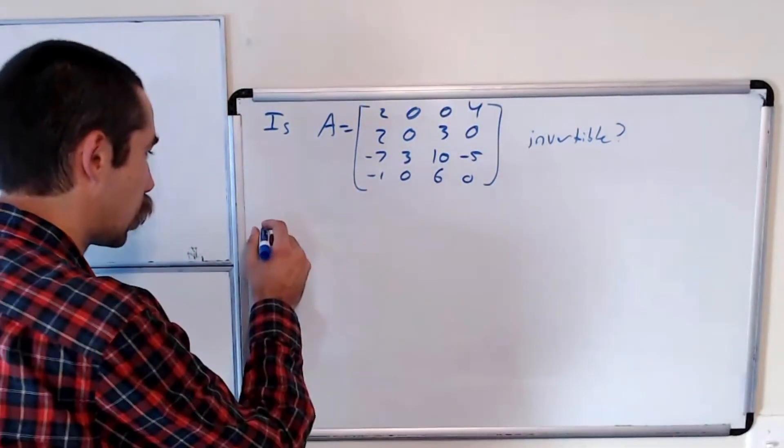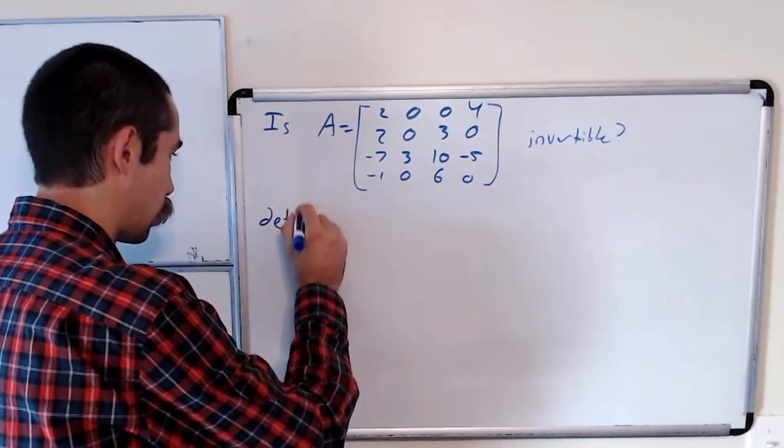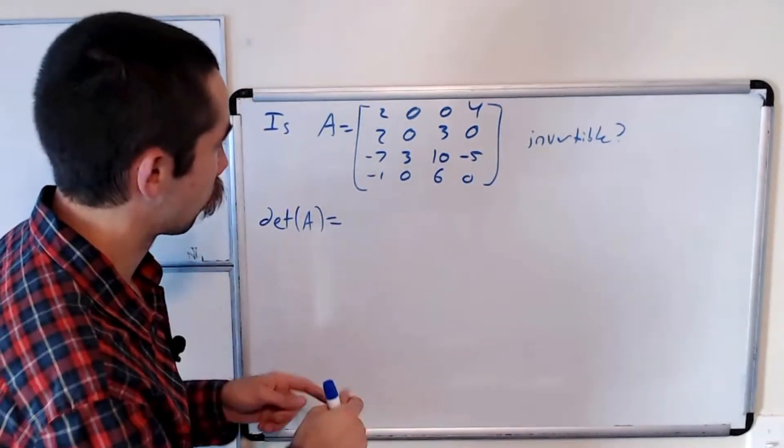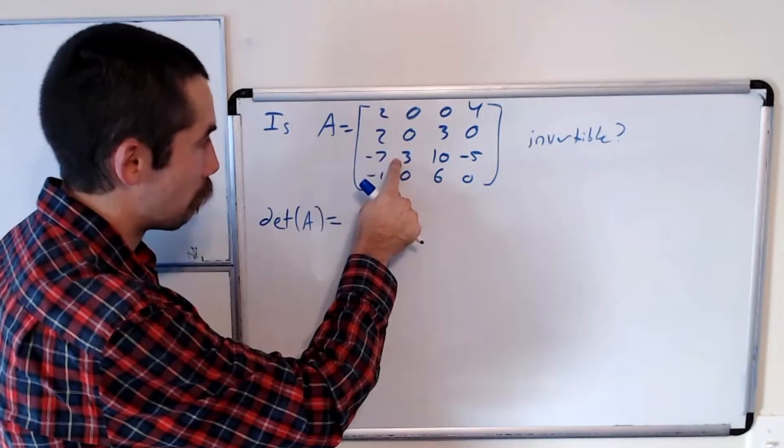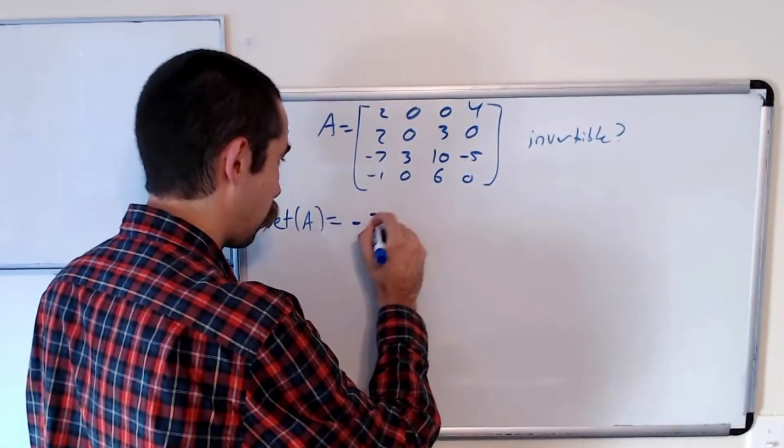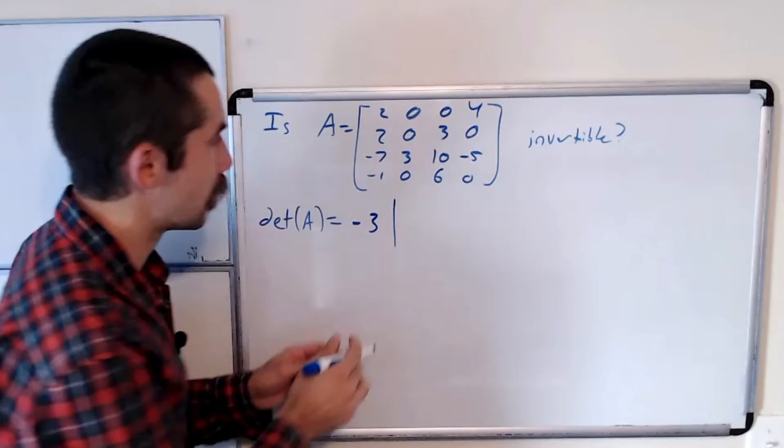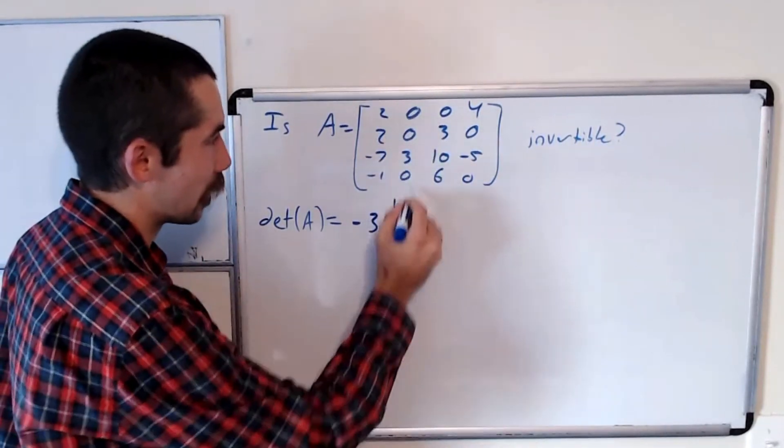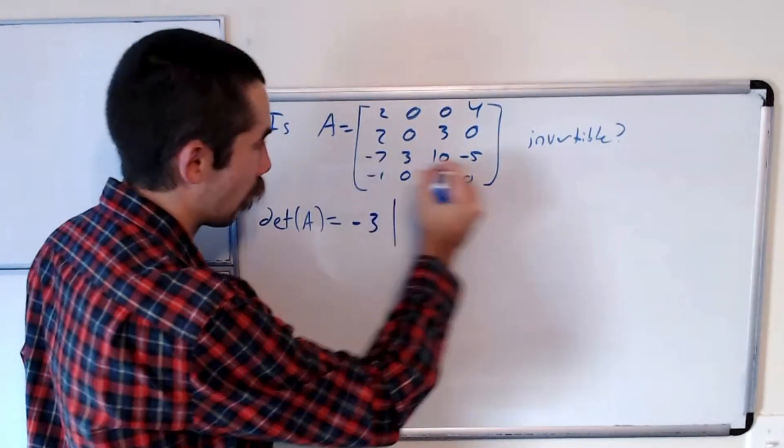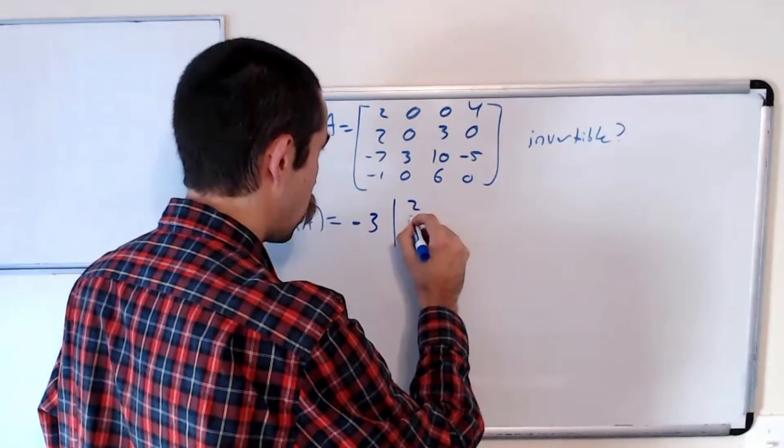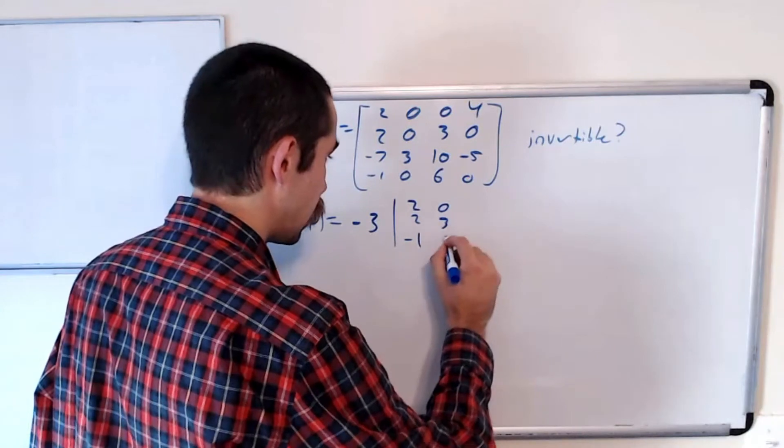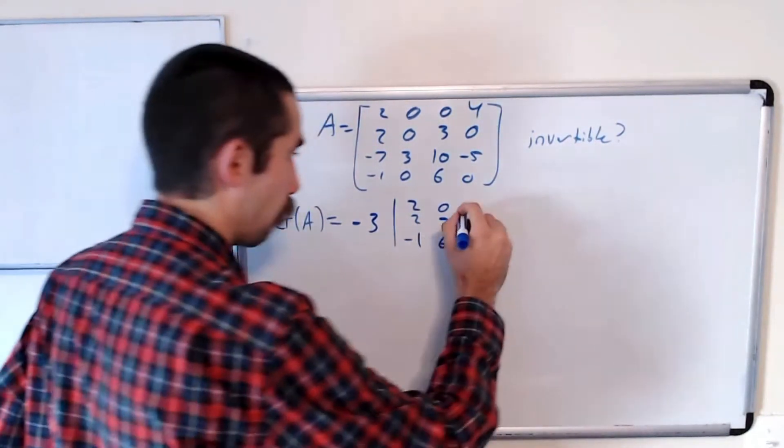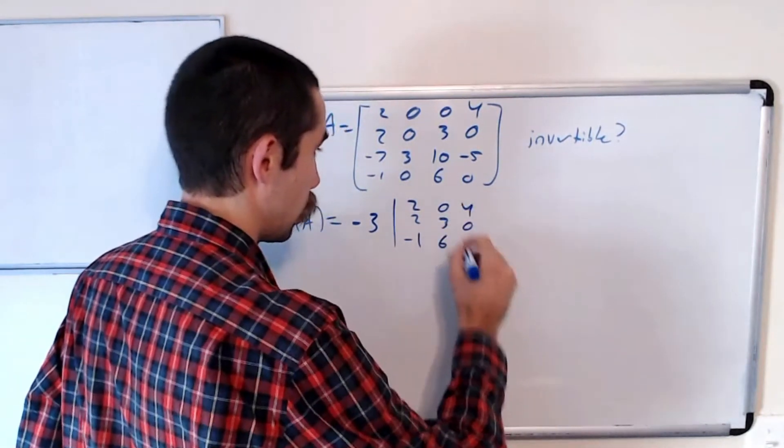So the determinant of A is equal to... okay, so it goes plus minus plus minus. So negative three times the determinant of the matrix you get when you eliminate this second column and third row, which is two, two, negative one, zero, three, six, and four, zero, zero.